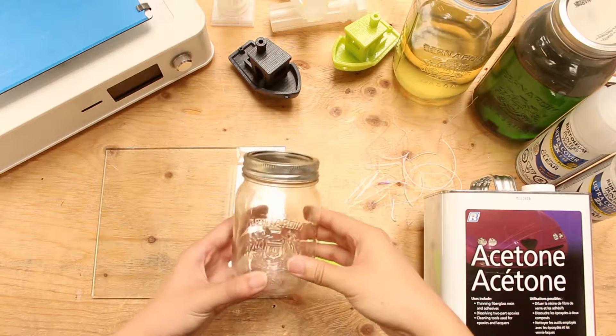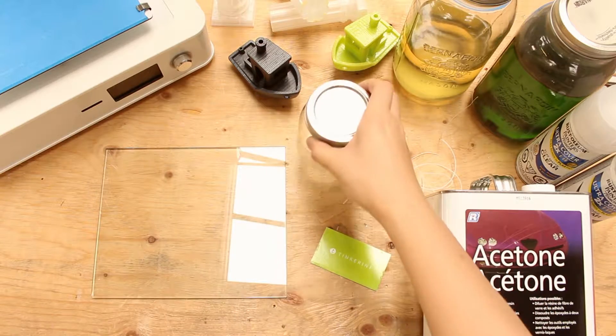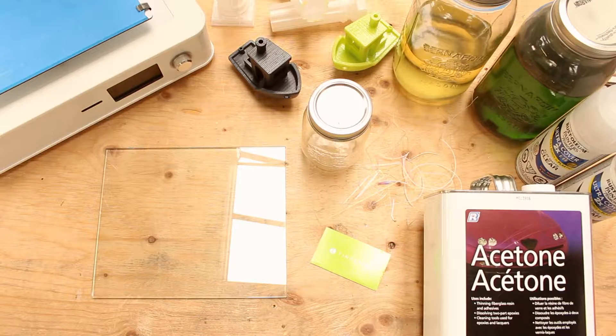I have a mason jar here for the experiment. PLA is a corn syrup-based type of plastic used in many 3D printers.